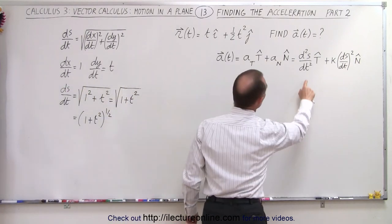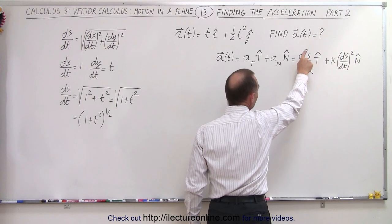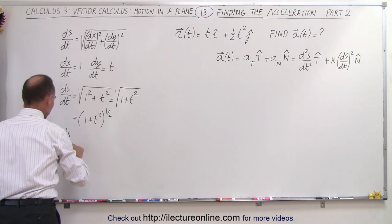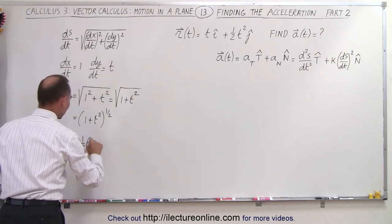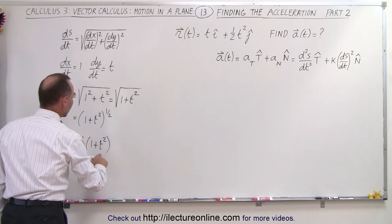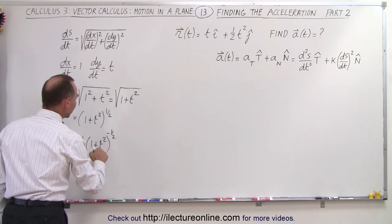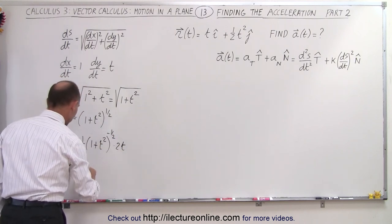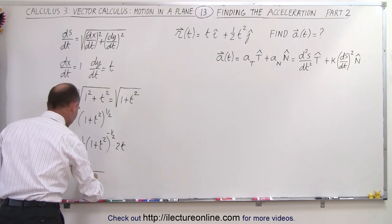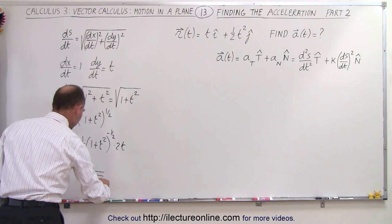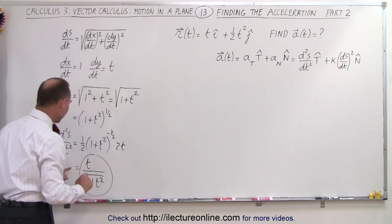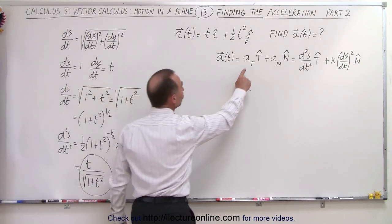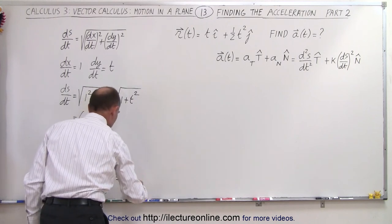To find the tangential component we need to find the second derivative of s with respect to time. So d²s/dt² is equal to 1/2 times (1 plus t squared) to the minus 1/2 power, times the derivative of what's inside, which is times 2t. Notice the 2's cancel out, the t goes to the top, so this becomes t divided by the square root of 1 plus t squared. That is the second derivative of s with respect to time, which defines the tangential component a_t.